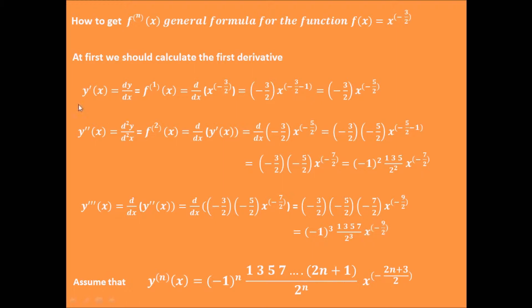Based on the first, second, and third derivatives, we can identify a trend. For the third derivative, the highest odd number in the numerator is 7, which can be written as 2 times 3 plus 1. For the second derivative, the number 5 can be written as 2 times 2 plus 1. So we can make an assumption that the nth order derivative equals minus 1 to the n times 1 times 3 times 5 times 7 times ... times 2n plus 1, divided by 2 to the n, times x to the power of minus 2n plus 3 divided by 2.